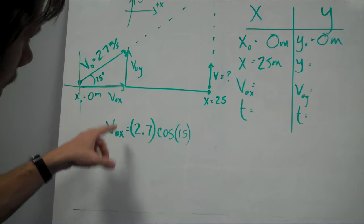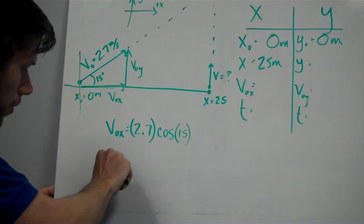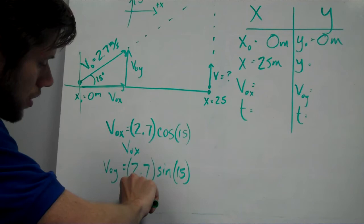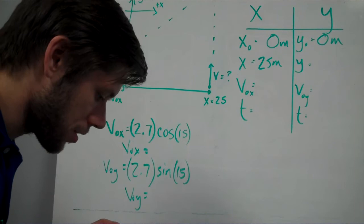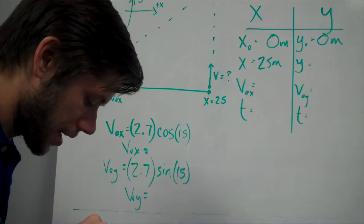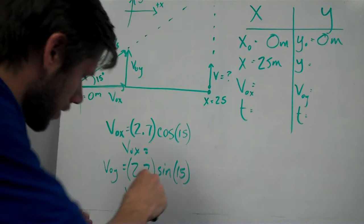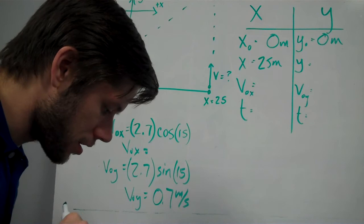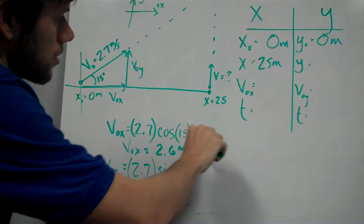In the same vein, V-naught y is 2.7. This will be the sine of 15. And we can run both those. Fair calculator here, making sure we're in degree mode. We absolutely are. So, 2.7 times the sine of 15 gives us 0.7, rounded, meters per second. So, in the y direction, that's how fast our runner is running. 2.7 times the cosine of 15 gives us 2.6, so meters per second. And so, those can go up here.